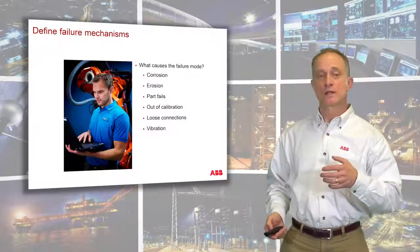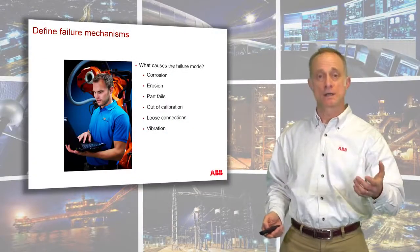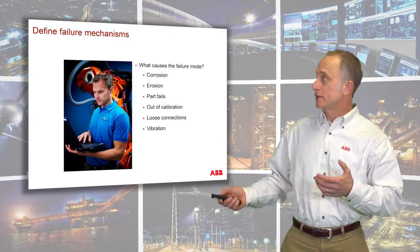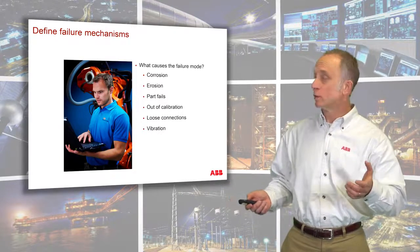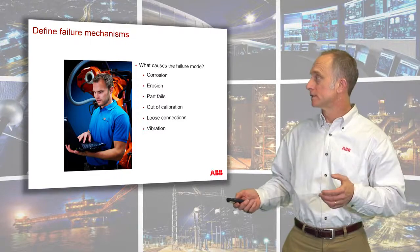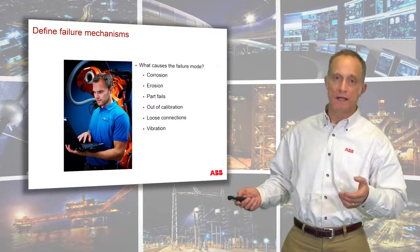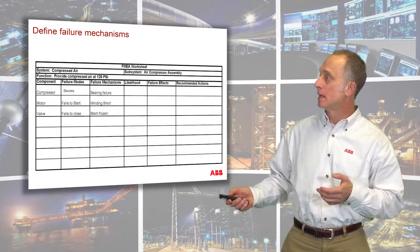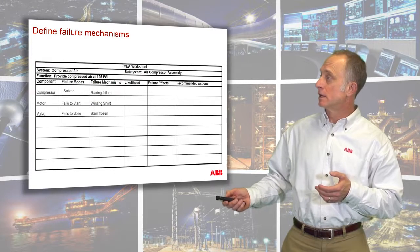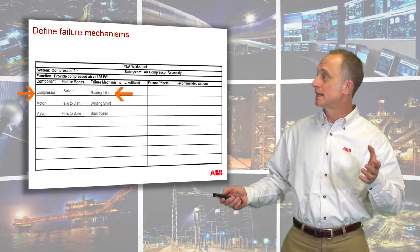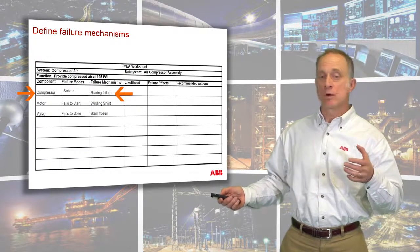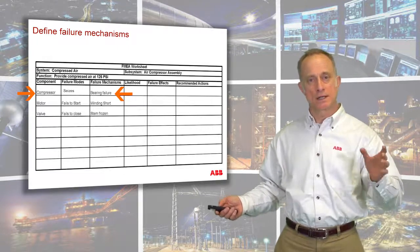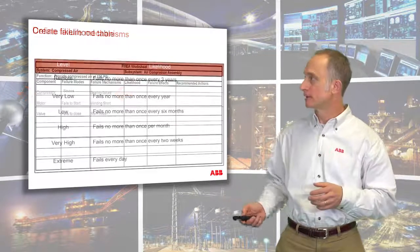Next we look at failure mechanisms — what would cause these things to fail. Examples include corrosion, erosion, part failures, or miscalibration. In our example, the compressor failure mode is that it seizes, and the failure mechanism that would cause that might be a bearing failure. We go through all of our systems like that and fill out the sheet.